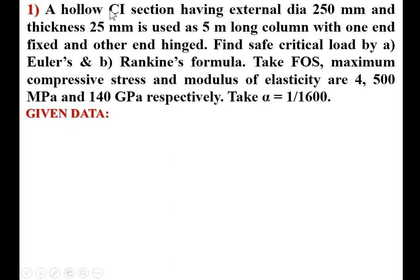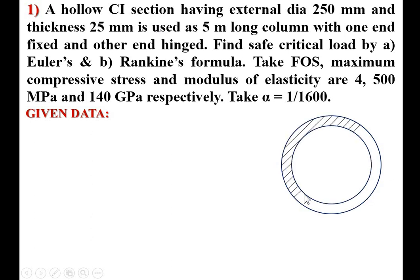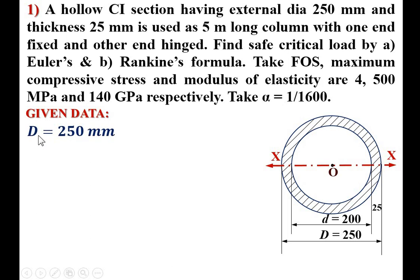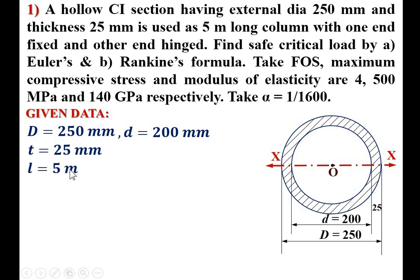First, write down the given data. The hollow CI section has external diameter D = 250 mm and thickness 25 mm. Drawing the hollow circular cross-section, the outer diameter is 250 mm and thickness is 25 mm. So the inner diameter is 250 − 25 − 25 = 200 mm. Capital D (external diameter) = 250 mm, internal diameter d = 200 mm. The column is 5 meters long, so L = 5 m.